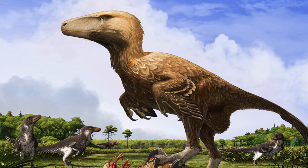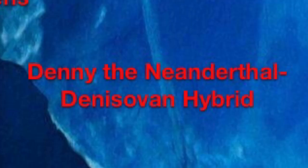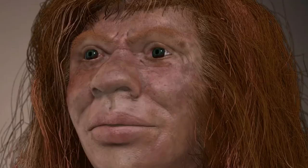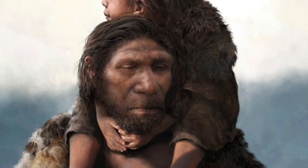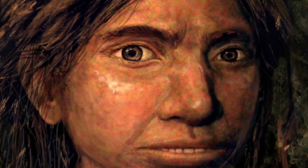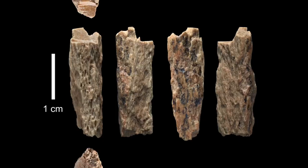Denny the Neanderthal-Denisovan Hybrid. More scientifically, Denisova 11 — this is a fossil of a girl dated to 90,000 years old, at least 13 years old when she died. She is thought to be an archaic human hybrid of Neanderthal and a Denisovan. She was found in Siberia during 2012 and represents the first time an ancient individual was discovered whose parents belonged to two distinct species of humans.